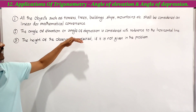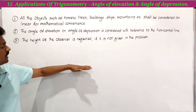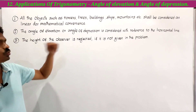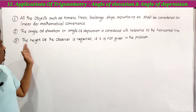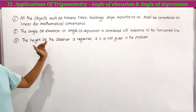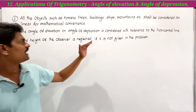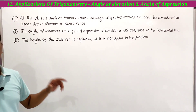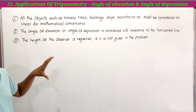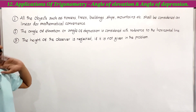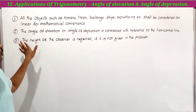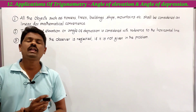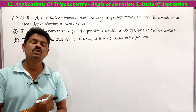The angle of elevation or angle of depression is considered with reference to the horizontal line of the observer. Third: the height of the observer is neglected if it is not given in the problem. So with these three key points, we can solve the problems.